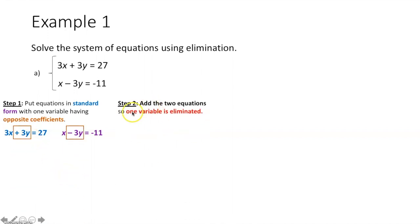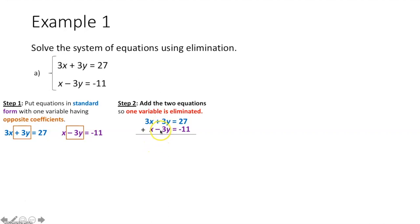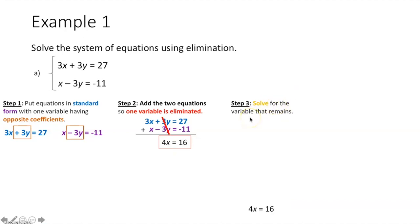Step 2: add the two equations together. We stack them and add down. 3x plus x gives 4x. 3y plus negative 3y cancel out. 27 plus negative 11 gives 16. So we have 4x = 16. Step 3: solve for x. Divide both sides by 4 and we get x = 4.